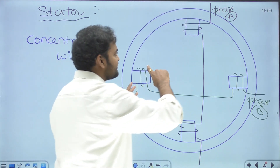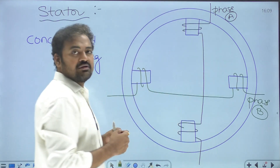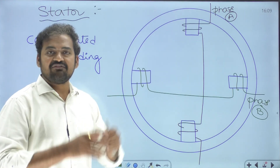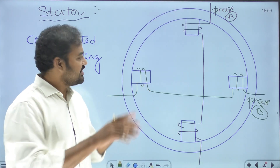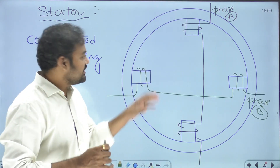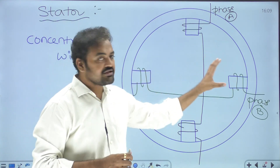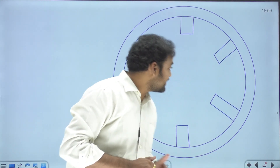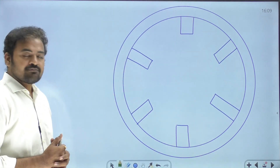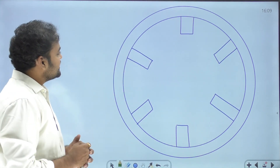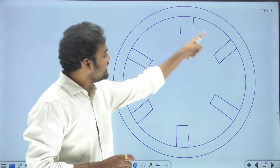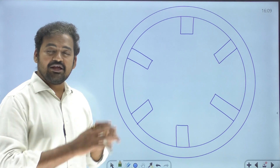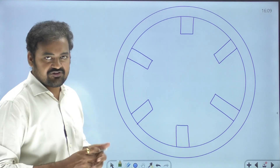Similarly, if the machine has six poles, you can wind three phases — every two poles create one phase. If there are six poles, we can create a three-phase winding. Let me show that particular diagram: a stator magnetic core having six poles, so we can place three-phase winding here.